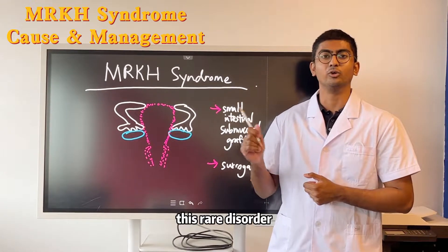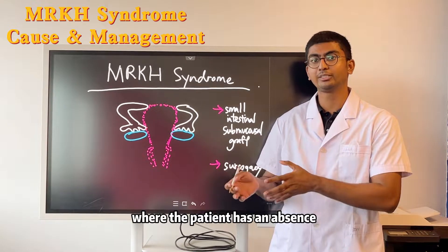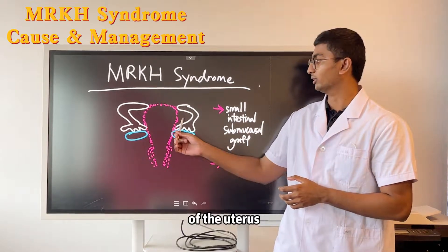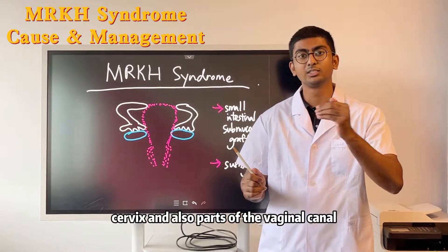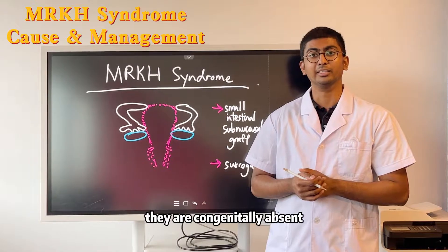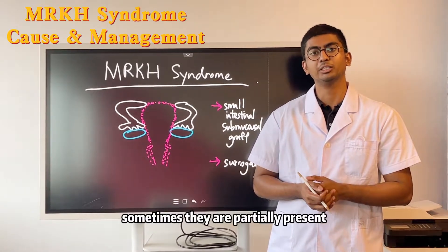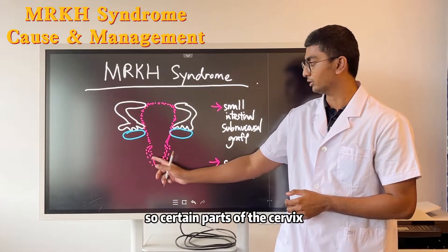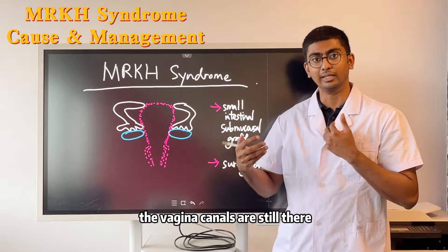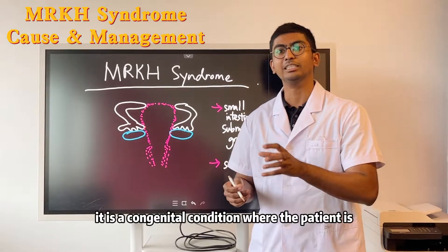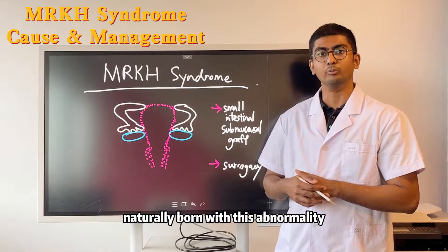This rare disorder is a congenital abnormality where the patient has an absence of the uterus, cervix, and also parts of the vaginal canal. They are congenitally absent, though sometimes partially present — certain parts of the cervix or vaginal canal may still be there — but in general, the patient is naturally born with this abnormality.